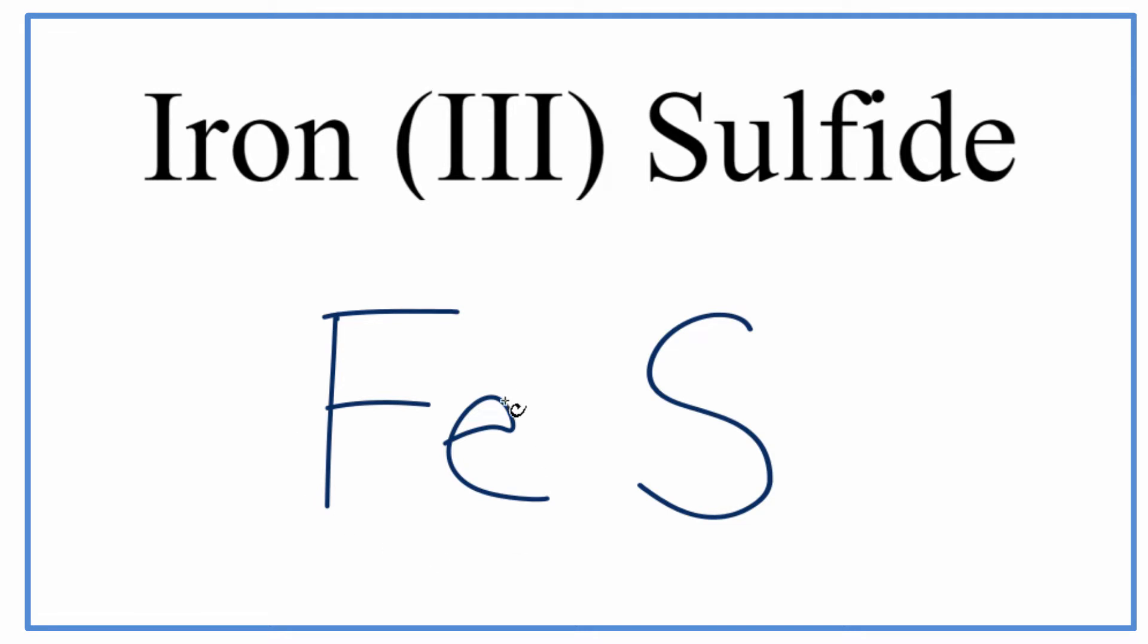Because we have a metal and then a non-metal, that means we have an ionic compound, and we're going to have to deal with charges. We can see that the charge for iron is written right here. It's the Roman numeral three. So iron has a charge of plus three.